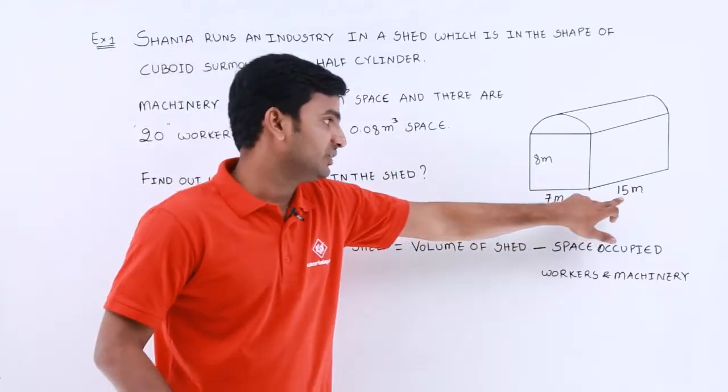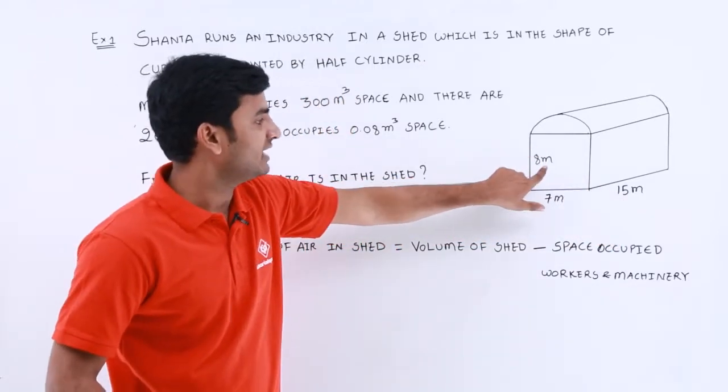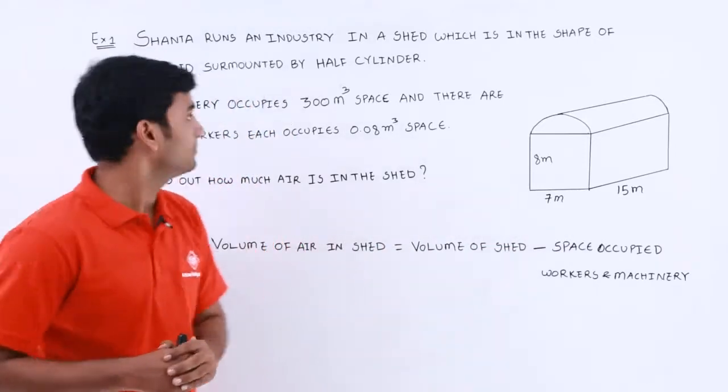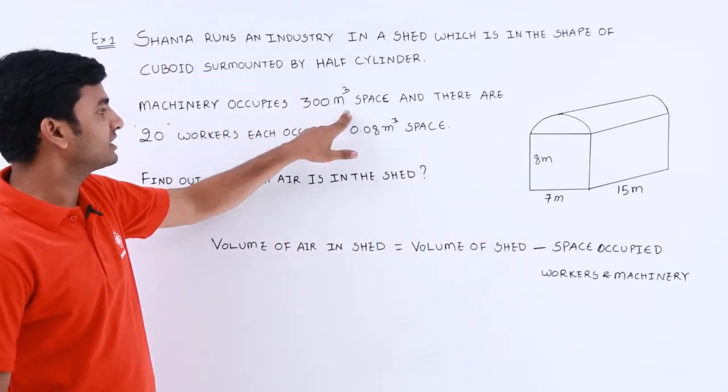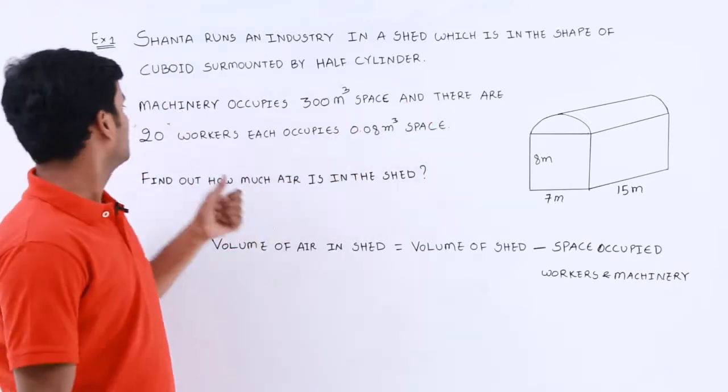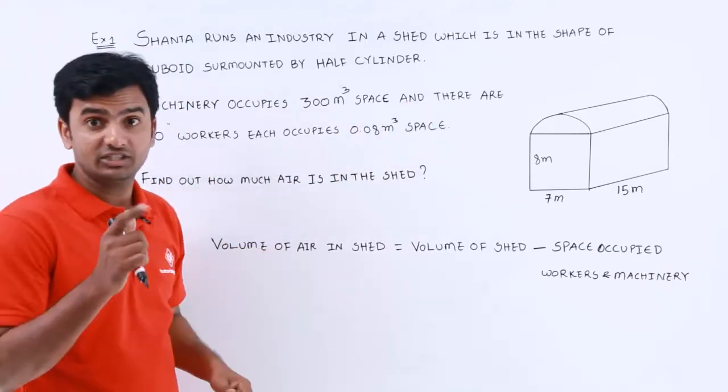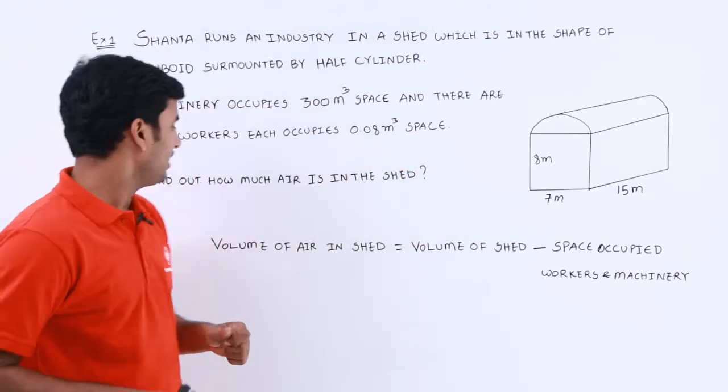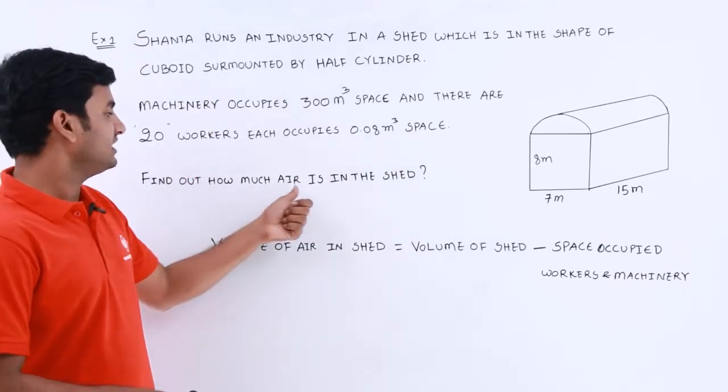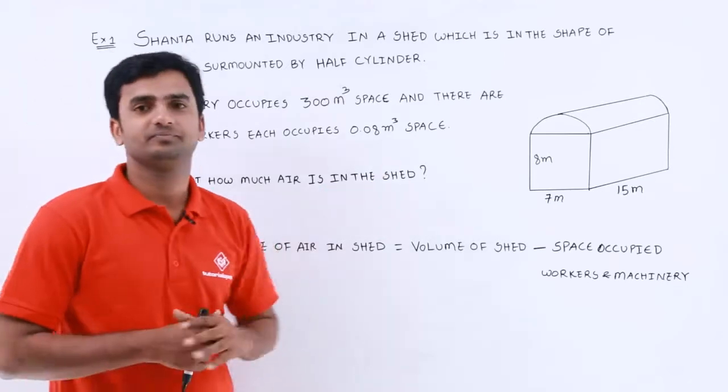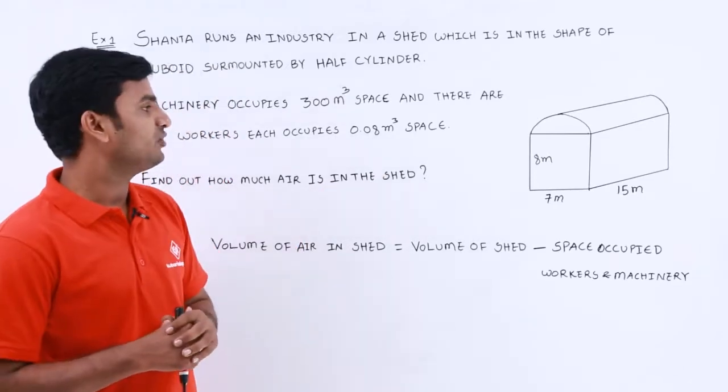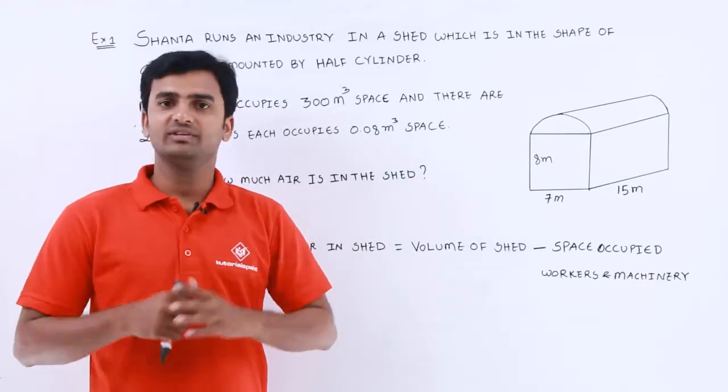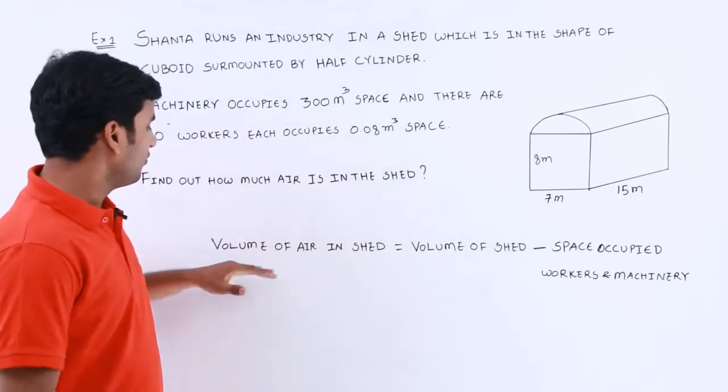The base is 7 meter into 15 meter and height of this cuboid is 8 meter and there is machinery in this industry. Machinery occupies 300 meter cube space and there are 20 workers each occupies 0.08 meter cube of space. So here we have to find out how much air is in the shed.